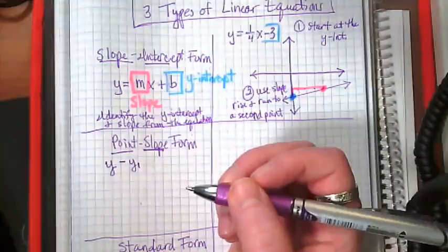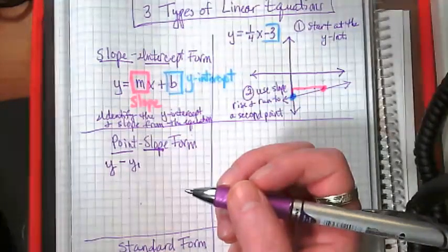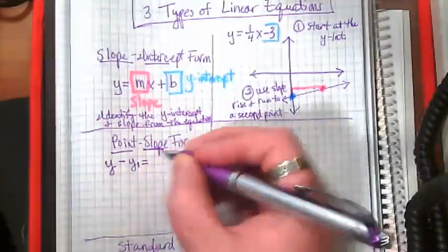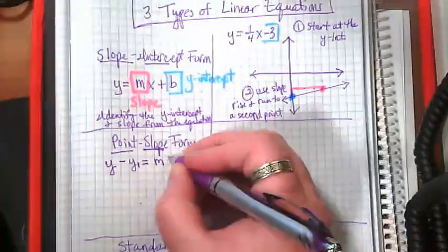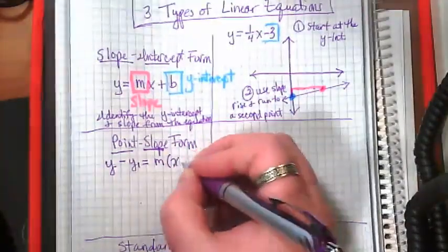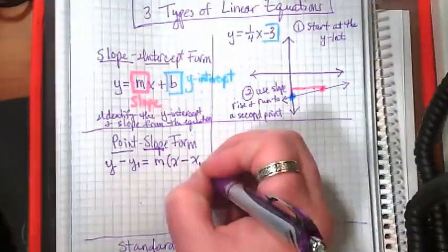This equation starts off y minus y with a little 1. We call that sub 1. Y minus y sub 1 equals m times x minus x sub 1.